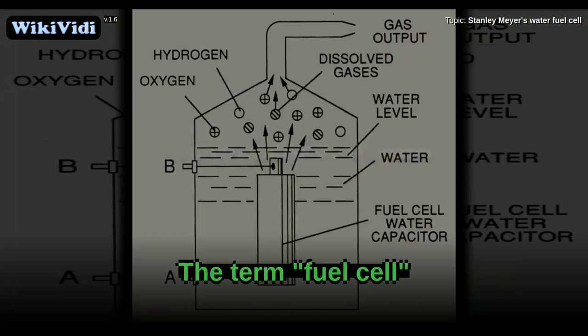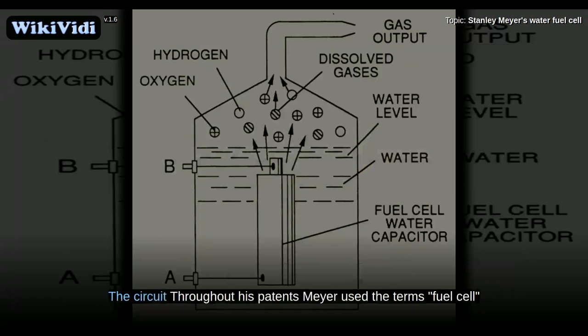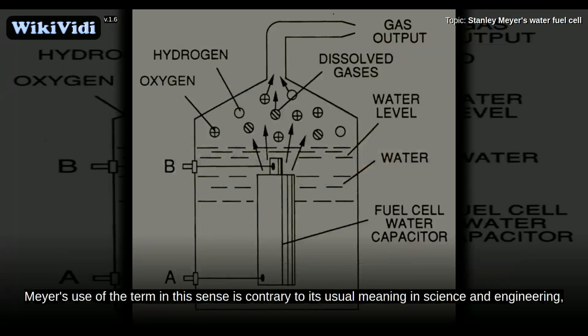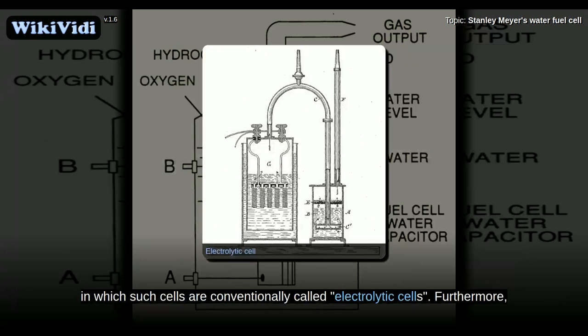The term fuel cell. Throughout his patents Meyer used the terms fuel cell or water fuel cell to refer to the portion of his device in which electricity is passed through water to produce hydrogen and oxygen. Meyer's use of the term in this sense is contrary to its usual meaning in science and engineering, in which such cells are conventionally called electrolytic cells.